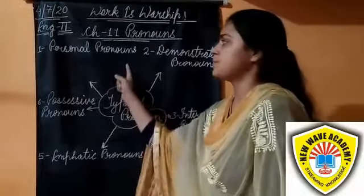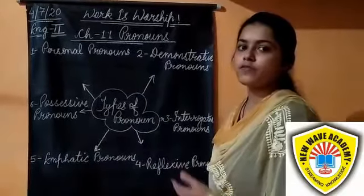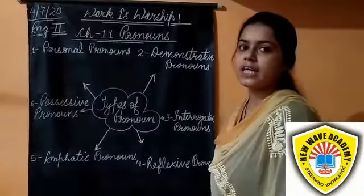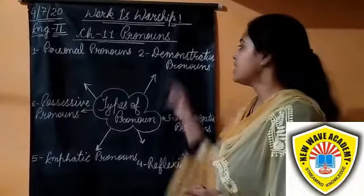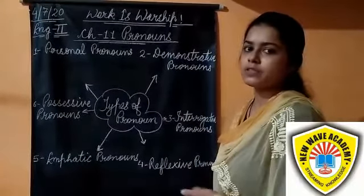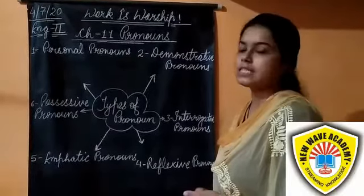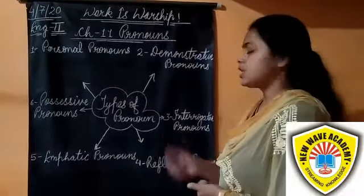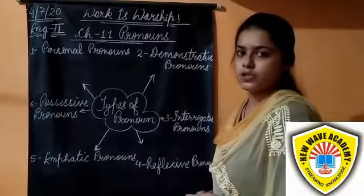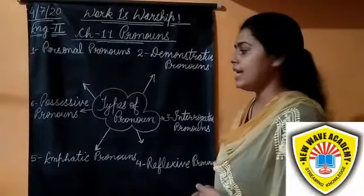Personal pronoun is used in place of a noun. For example: he, she, it, I, we, you, they. Demonstrative pronoun is used when we point out the object. For example: this, that, those, these. And interrogative pronoun is used to ask a question. For example: what, which, why.